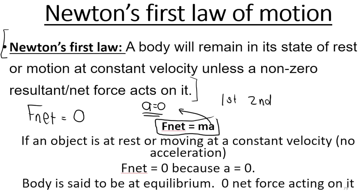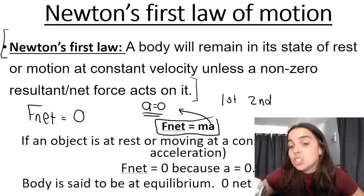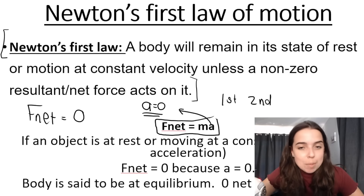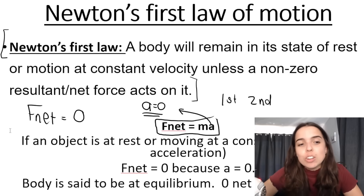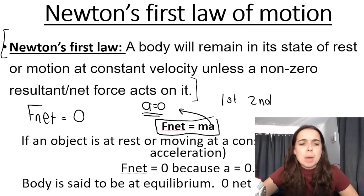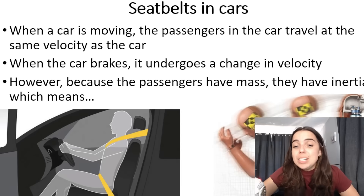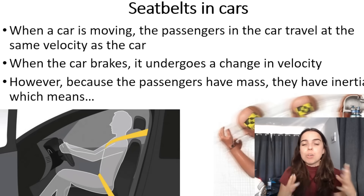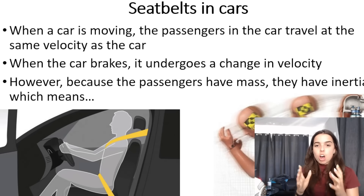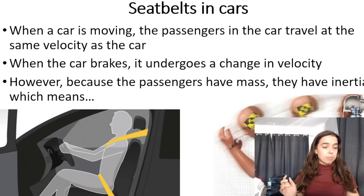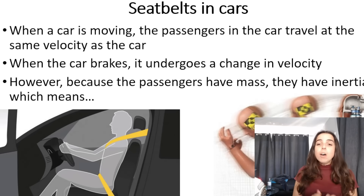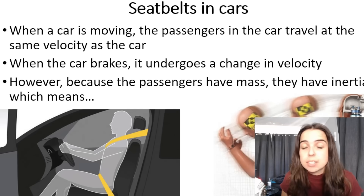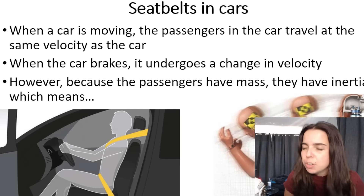Before I go into a calculation, there is something very important you need to know. According to exam guidelines, you need to know safety considerations in terms of Newton's first law of motion. You need to understand why it is important to wear seat belts when traveling in a car. Think about this: you're sitting in a car without a seat belt, and the car is going at 120 kilometers per hour — that's very fast.